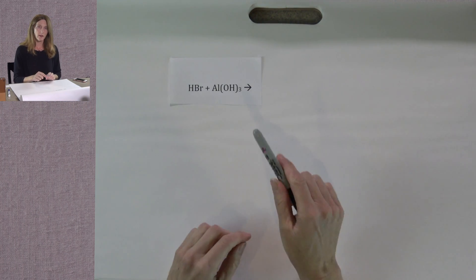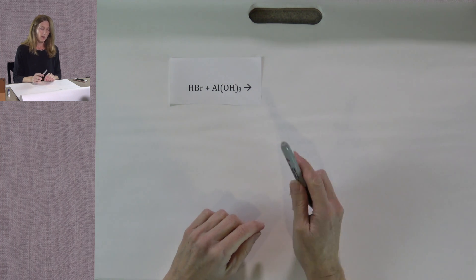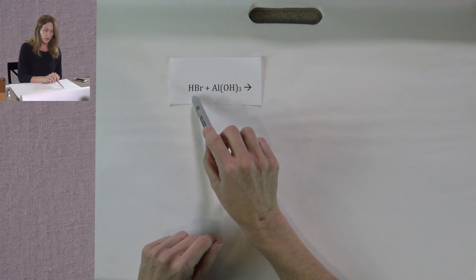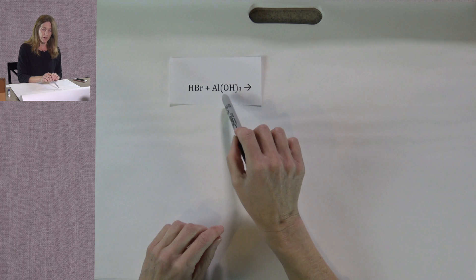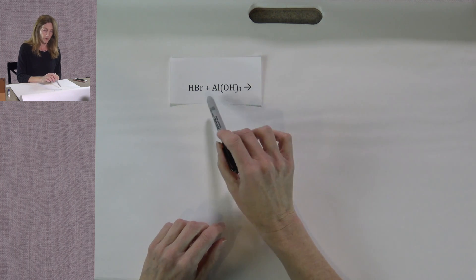Let's look at a second neutralization reaction. We have our acid, hydrobromic acid, combining with a base. In this case, the base is aluminum hydroxide.